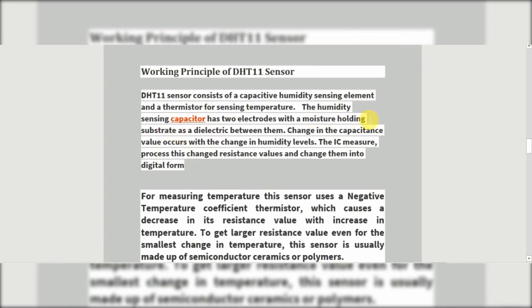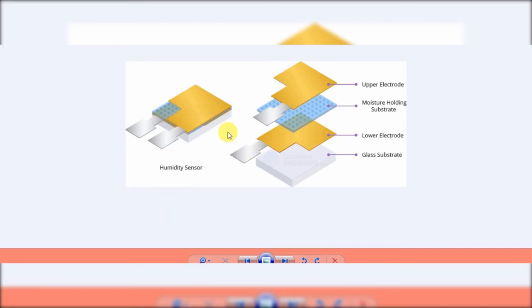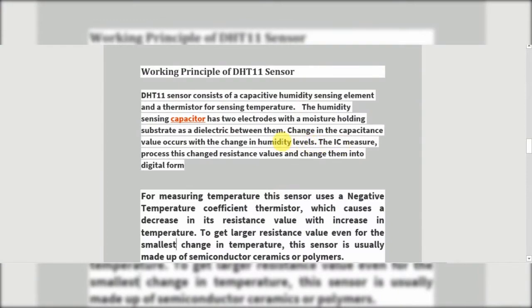The humidity sensing capacitor has two electrodes — upper and lower — and a moisture-holding substrate as a dielectric between them. You can see the moisture-holding substrate here, with the two electrodes on either side — this assembly is your humidity sensor. A change in capacitance value occurs with the change in humidity level, and the IC measures and processes this change in resistance value, converting it into a digital form.